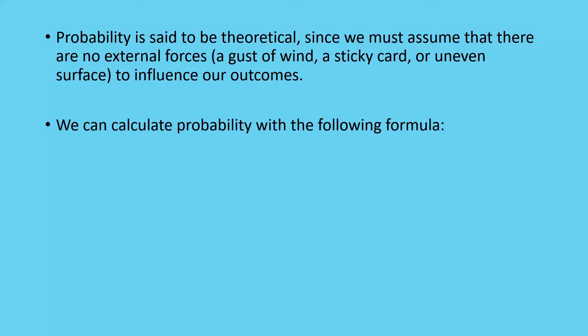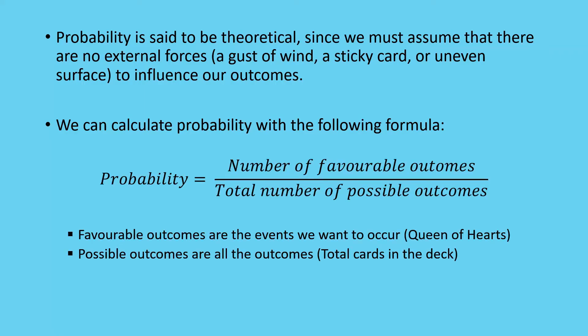And when we want to calculate probability, we usually use the following formula. Probability is equal to the number of favorable outcomes over the total number of possible outcomes. Where our favorable outcomes are the events we want to occur. In this case, the Queen of Hearts. There's only one of them.